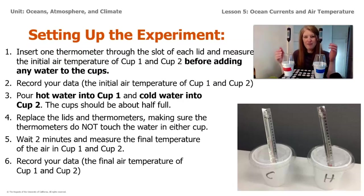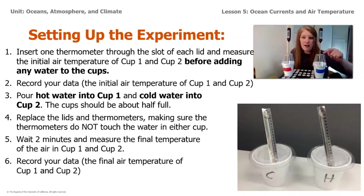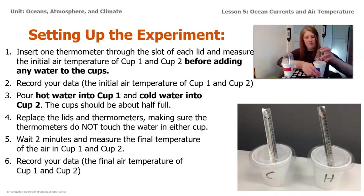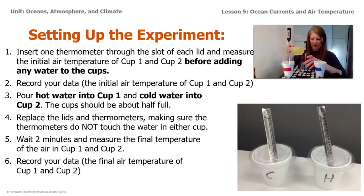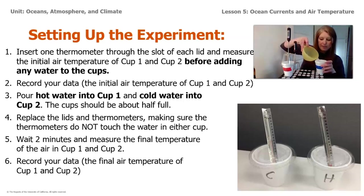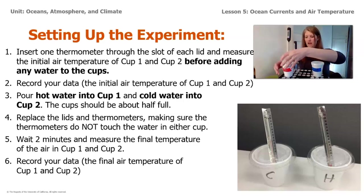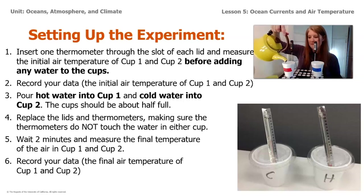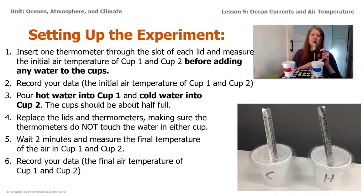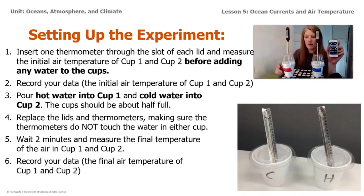Once we've placed the hot and cold water in each cup, we'll set a timer for two minutes and then record the air temperature after two minutes. You can record in a data table — just note the initial and final air temperature for both the hot water and cold water cups. Now let's add the water: in the cold cup I pour cold water about halfway, and in the hot cup I pour hot water from a tea kettle to the same height. Placing the lids on and starting the timer.